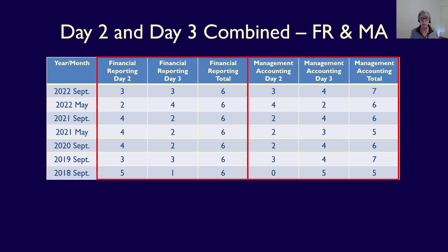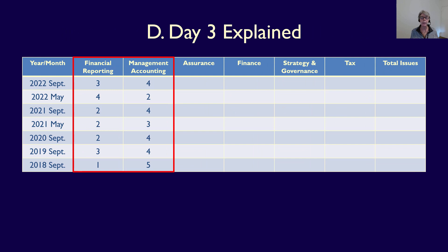To be clear, you must be competent in either financial reporting or management accounting to pass the CFE. It's because these two technical areas are marked together across both days that the issues on Day Three for financial reporting and management accounting vary so much — ranging between two and four issues, even as high as five in 2018. The combined view of both days is what makes sense of the Day Three numbers.